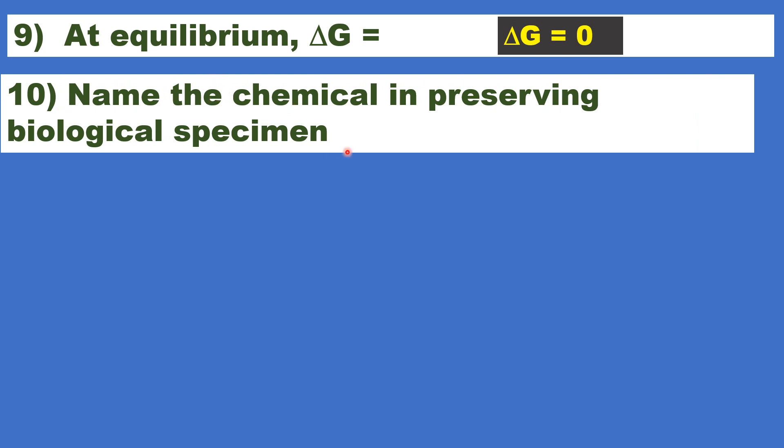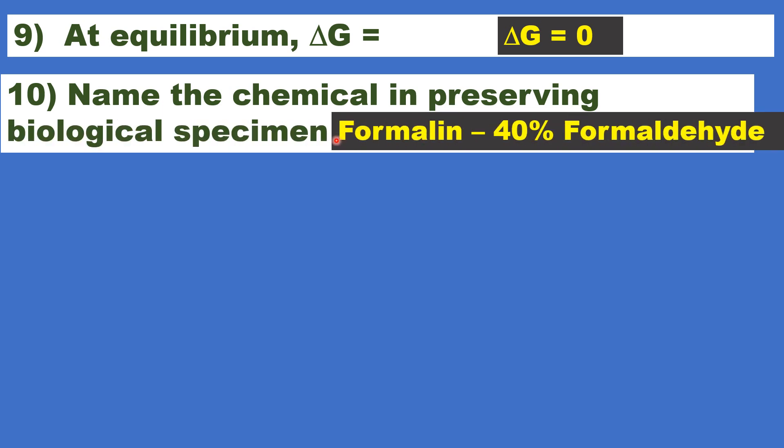Name the chemical used in preserving biological specimen in biology lab. It is called formalin, 40% formaldehyde aqueous solution, 40% formaldehyde plus 60% water.